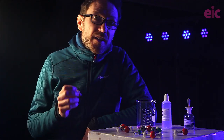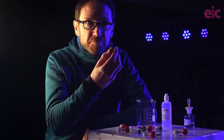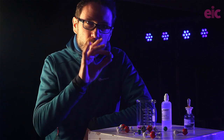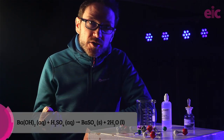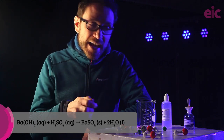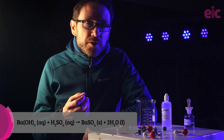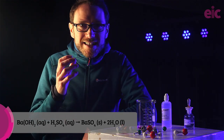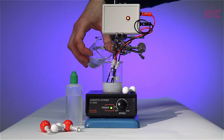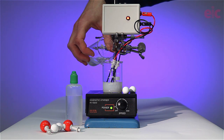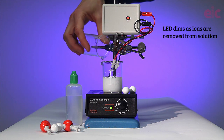But we have a problem with the other spectator ions in solution. Once we've got the basic setup working we can leave them in, but for now let's use the reaction between barium hydroxide and sulfuric acid to take care of that issue. Students at this level may already know how barium ions can test for sulfate ions by forming the white barium sulfate precipitate, which removes those ions from solution, allowing us to focus just on the hydrogen and hydroxide ions.